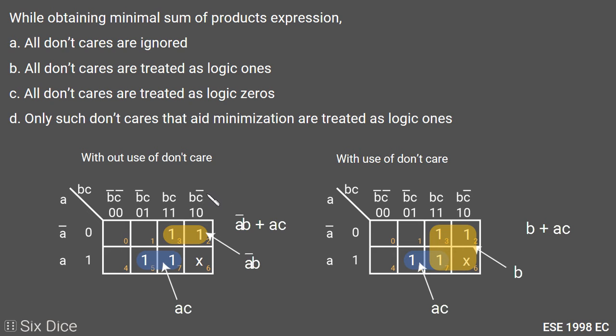Here we take both cases: without using don't care condition and with using it. If we make one pair here and one pair here in this three-variable K-map, the first pair gives us ā·b minimization without using the don't care condition. The second pair gives us a·c minimization.